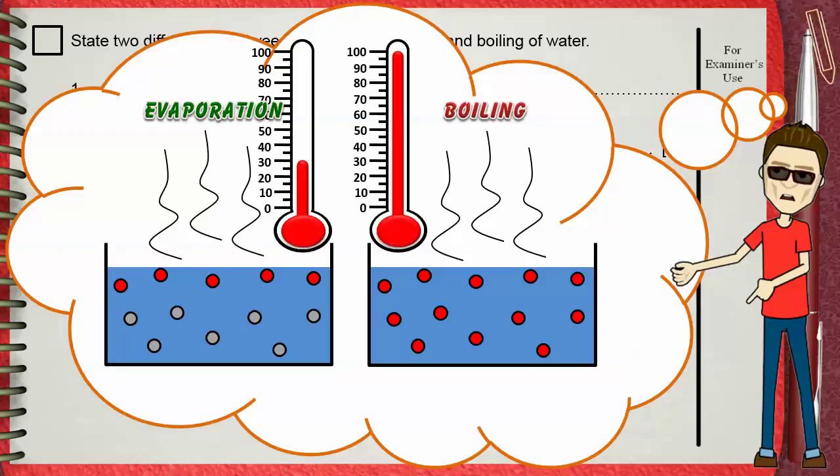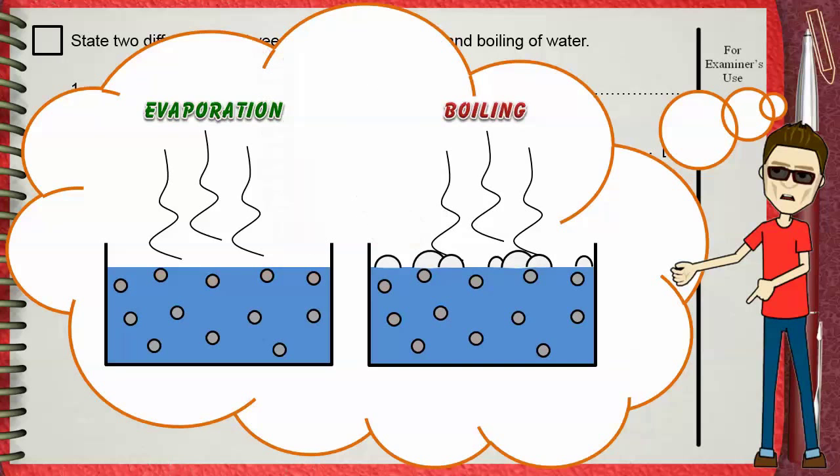Evaporation takes place at any temperature below the boiling point, but boiling will not take place until the liquid reaches its boiling point. Of course, it's 100 degrees for water. When boiling is taking place, you can see bubbles, but this doesn't happen during evaporation.